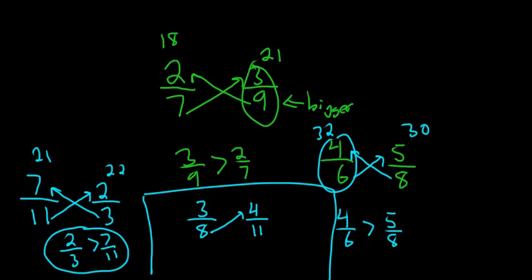You multiply. 8 times 4 is 32. 11 times 3 is 33. Oh, which one is bigger? 33 is bigger than 32. So barely, right? So 3 eighths is bigger than 4 over 11.